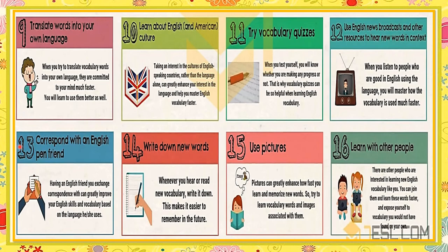Number thirteen: correspond with an English pen friend — you can always send me a message if you want to ask a question. It doesn't matter if your English grammar is wrong, because what matters is that we understand each other and use vocabulary words correctly. Number fourteen: write down new words you are not familiar with and look for the meaning in your dictionary or in Google. Number fifteen: use pictures — I always have words and pictures because learners of a second language easily learn when words and pictures are used together. And number sixteen: learn with other people — speak English even with your friends. Do not be shy.